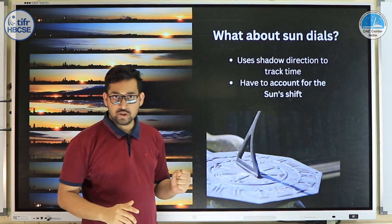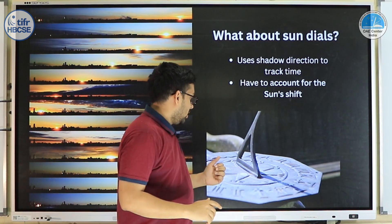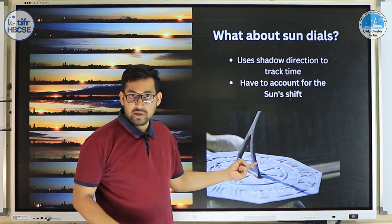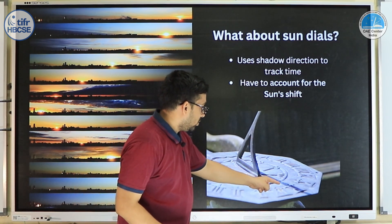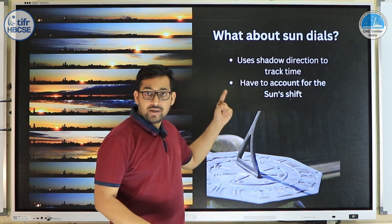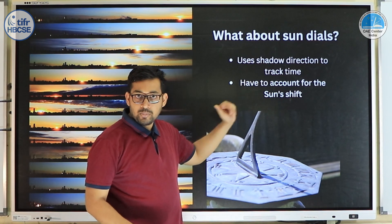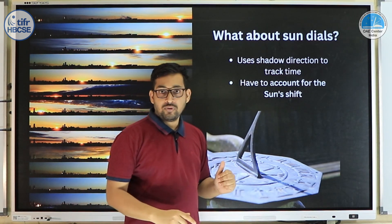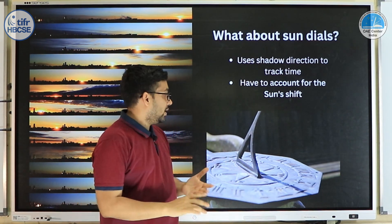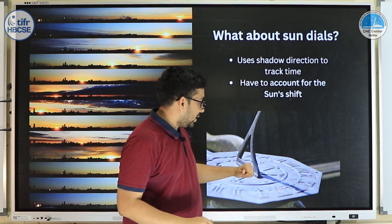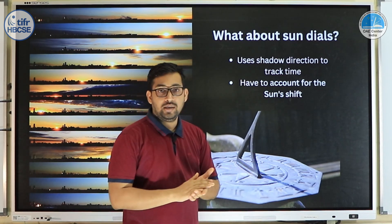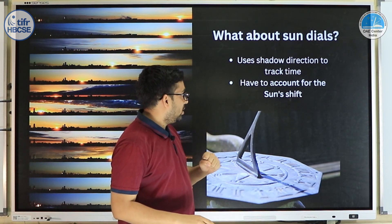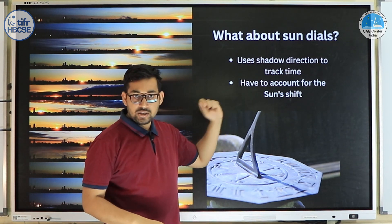A valid question arises: how would a sundial work in this situation? When we measure the direction of the shadow, it depends on where the Sun is. If the Sun is not at the same position at the same time each day, sundials should not work accurately — and that is exactly the case. We have to add or subtract time from a sundial reading, which we call the equation of time.